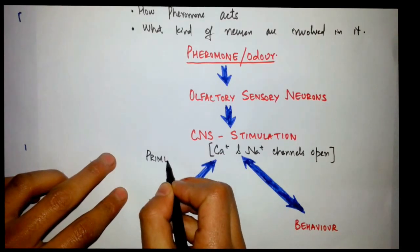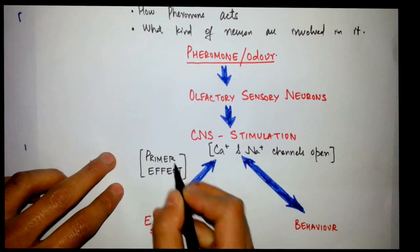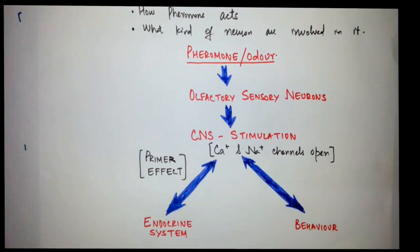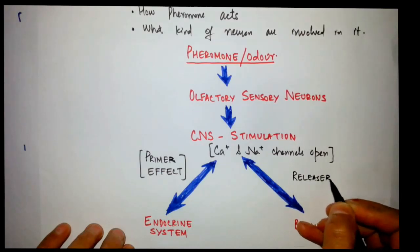When the endocrine system is stimulated, we call it primer effect - not only endocrine system, but endocrine system is an example and behavior is also an example. There might be any development, there might be any secretion of hormone after this pheromone gets secreted. When behavior or any other effect like that is temporary, we call it releaser effect.